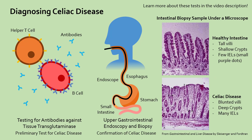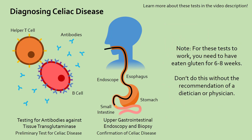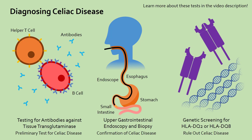Keep in mind, though, that this test requires you to eat gluten-containing foods for 6-8 weeks for the antibodies to build up and damage to be detected. This should only be done under the supervision of a dietician or trained physician. Finally, you can get genetic testing to see if you have HLA-DQ2 or DQ8. If you don't have these isoforms, it's virtually impossible for you to develop celiac disease. If you do have them, it doesn't necessarily mean you will develop celiac disease, but it does put you at an increased risk and more tests should be performed throughout your life. This testing is mostly done by the relatives of people with celiac disease to rule out the possibility of developing celiac disease themselves.